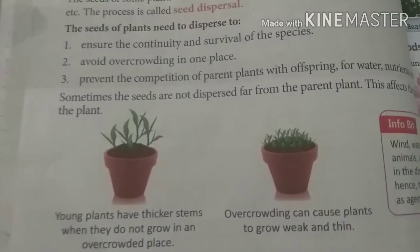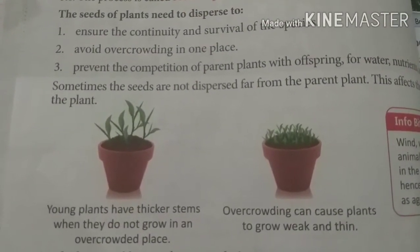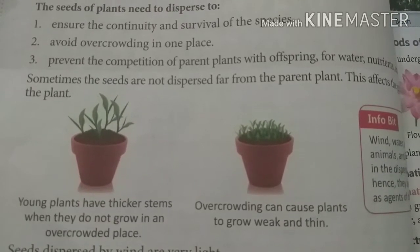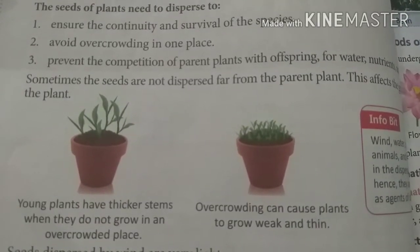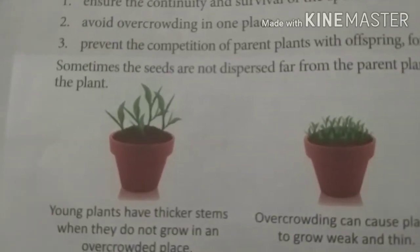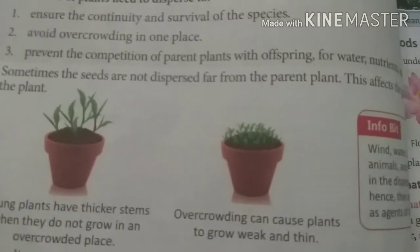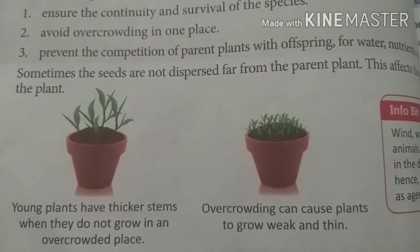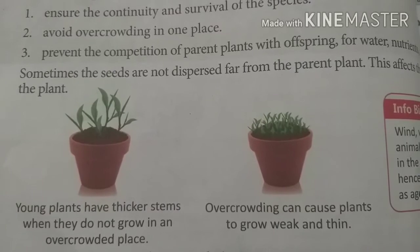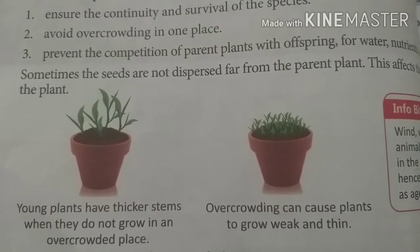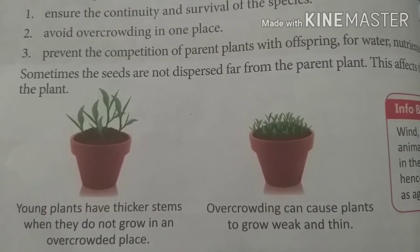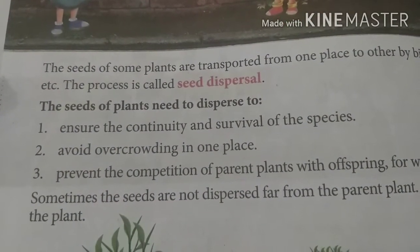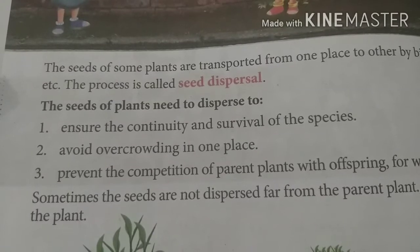You can see in this pot — in one pot there are fewer plants and they are healthy, while in the second pot many plants are growing and they are not healthy. This shows overcrowding in pot 2, while plants in pot 1 are healthy. So plants disperse to avoid overcrowding.